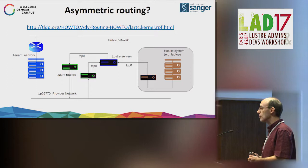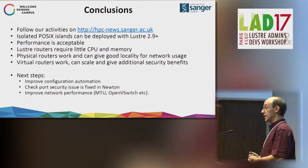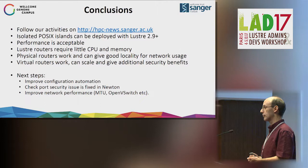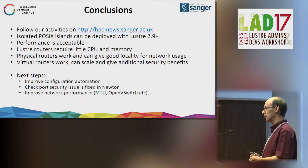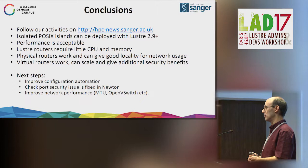To conclude: we did it, and it works. We can create isolated POSIX shared file systems using Lustre 2.9 for OpenStack tenants. This is a great stepping stone for giving shared file systems to OpenStack clients. Performance is acceptable, and Lustre routers don't need many resources so you can create as many as you like to scale up. Physical routers give better performance and better locality for network usage. What we'd like to do next: improve the automation — not many of the configuration steps have been automated yet and there's lots of scope for typos. We need to check in Newton, the next release, whether the port security bug is fixed. And we'll get around to improving performance — we haven't done anything with MTUs, still using 1400, and haven't looked at Open vSwitch tweaks or NIC ring buffer sizes.